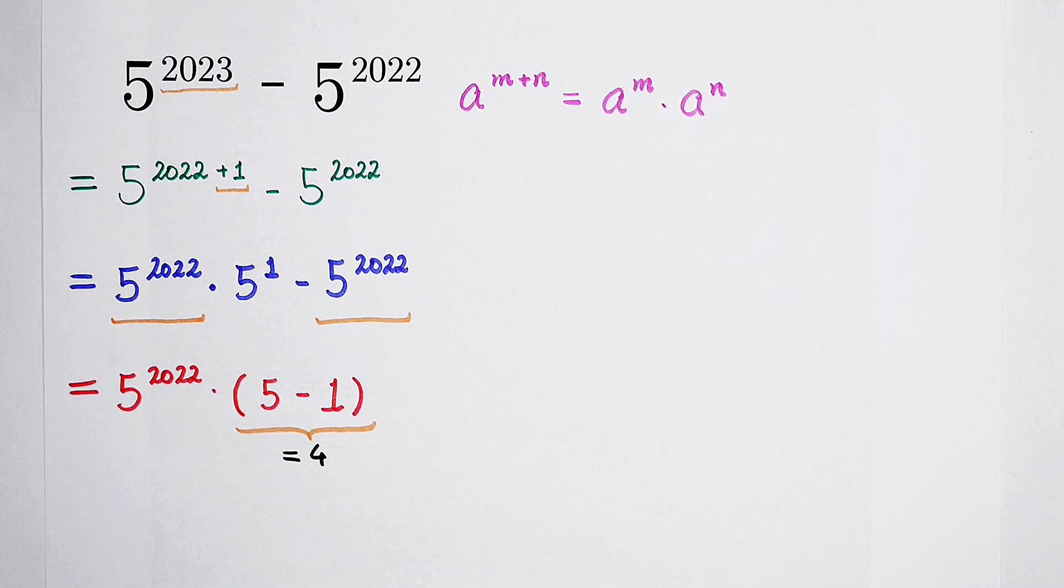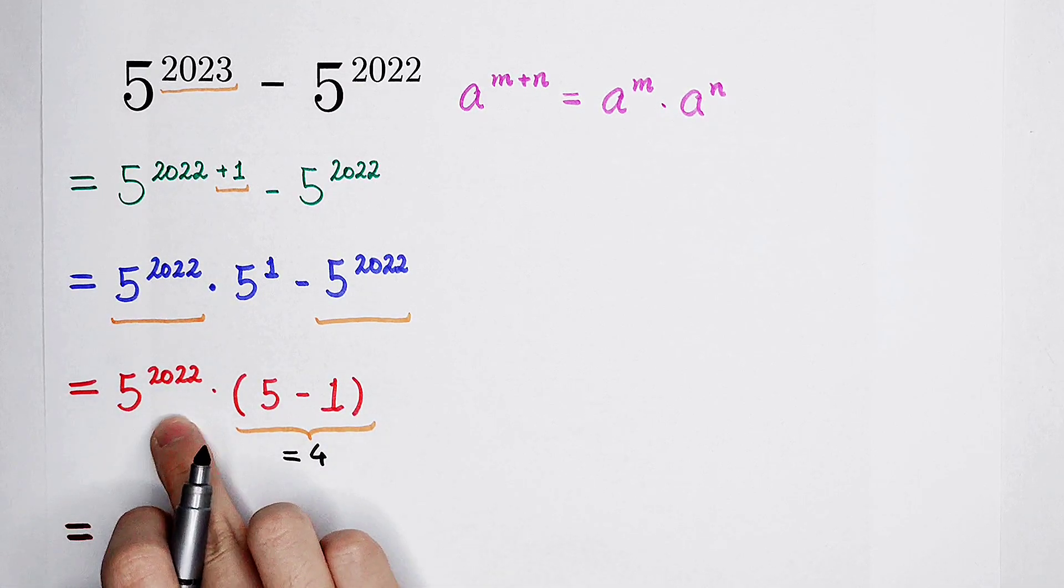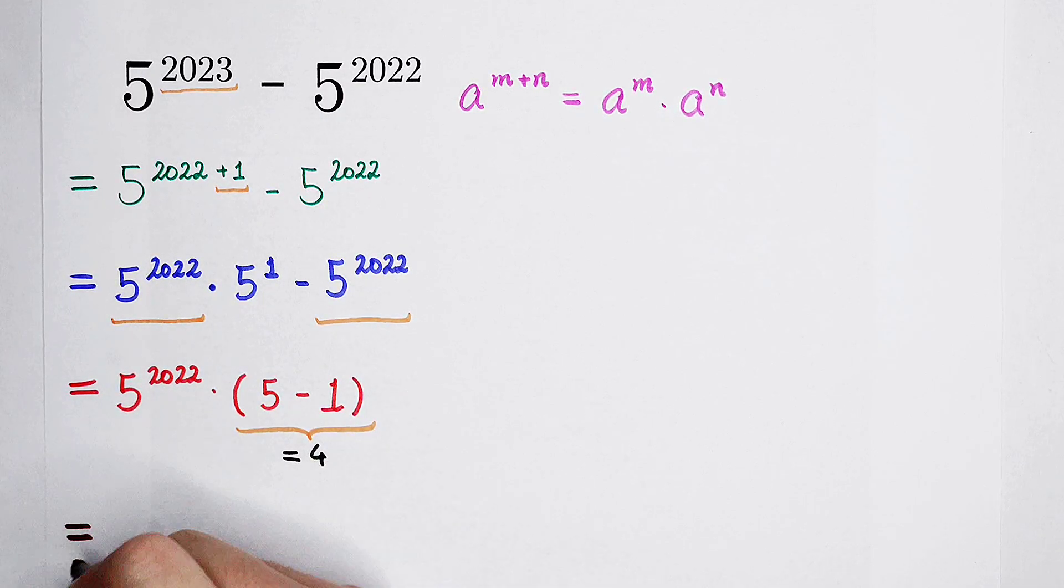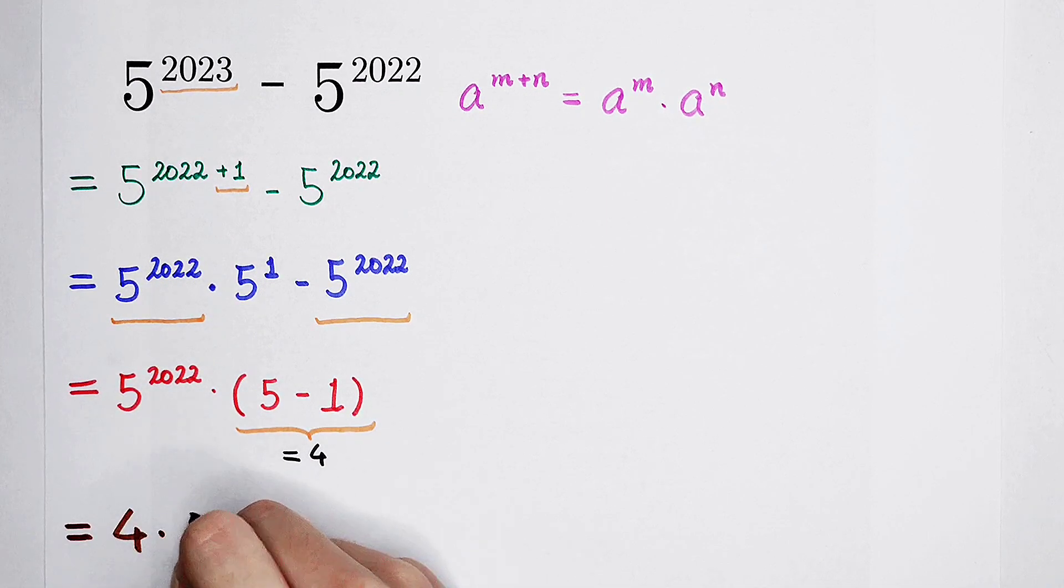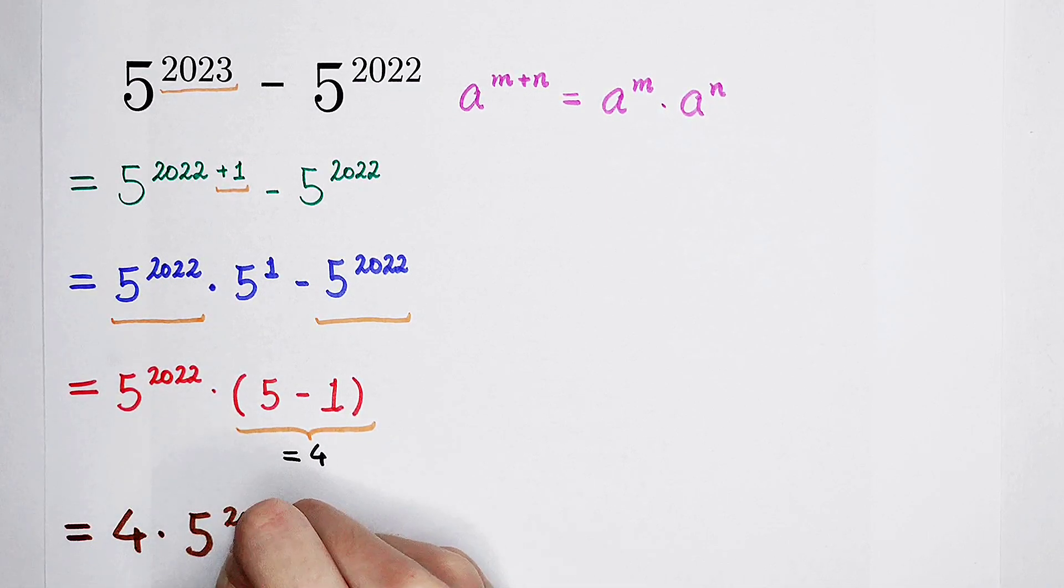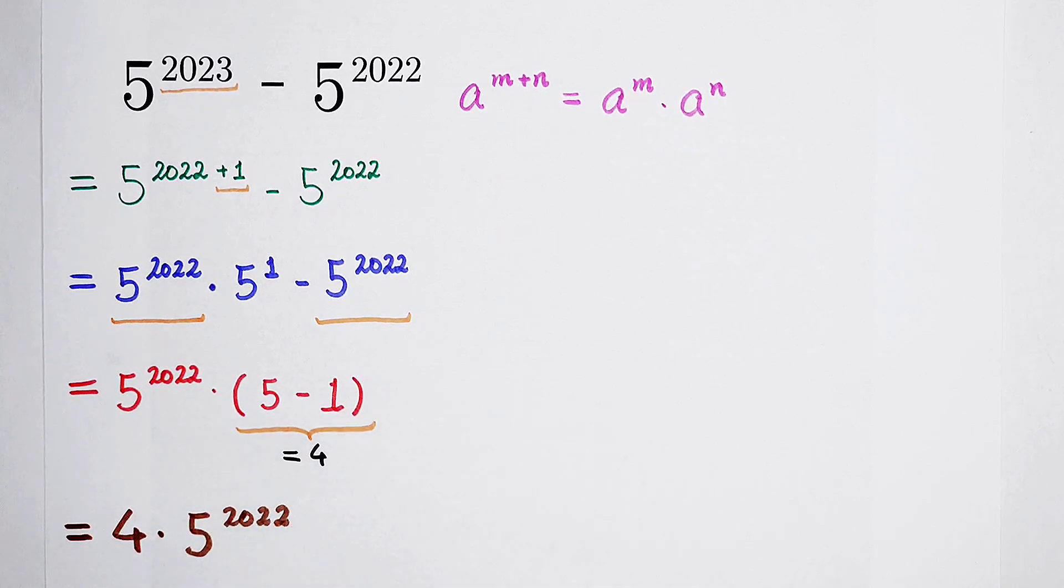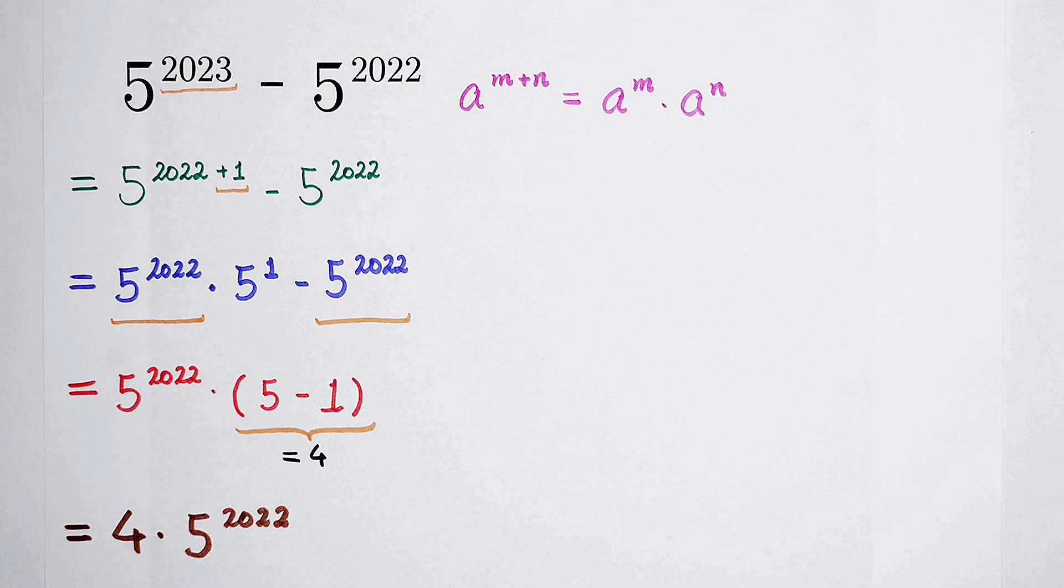So the result is 5 to the power of 2022 then times 4, or you can also write it as 4 times 5 to the power of 2022. Now stop! The result of this question is 4 times 5 to the power of 2022.